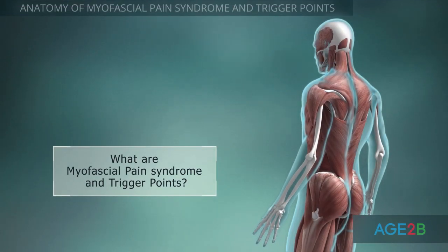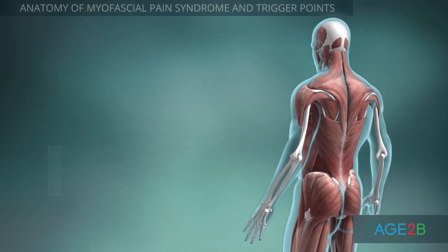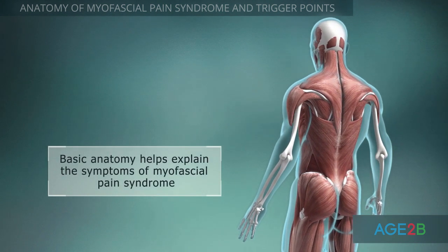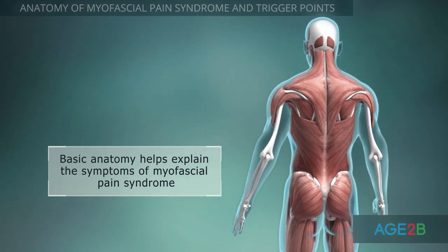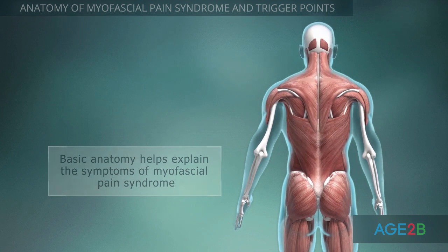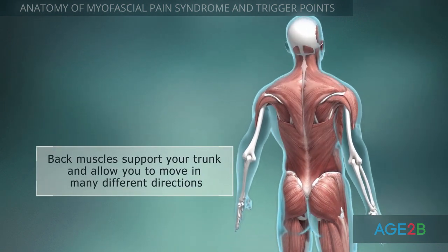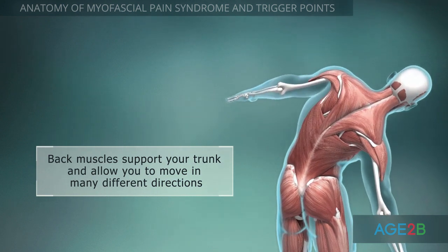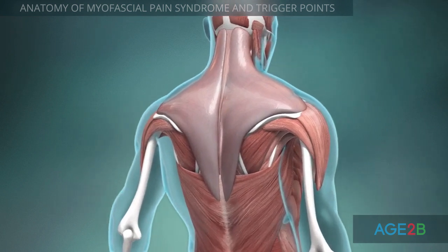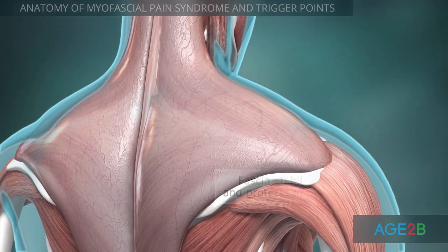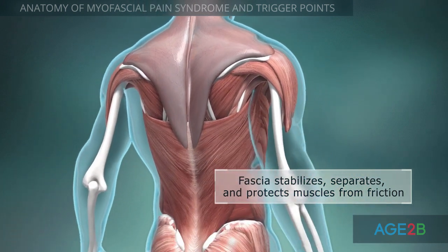In order to understand myofascial pain syndrome and what trigger points are, it's helpful to know the basic anatomy of the spine. Complex groups of supportive muscles in your back hold your body upright and allow your trunk to twist, move, and bend in many directions. Each muscle is surrounded with a connective tissue sheath called fascia, which stabilizes and separates muscles, reducing friction between them.